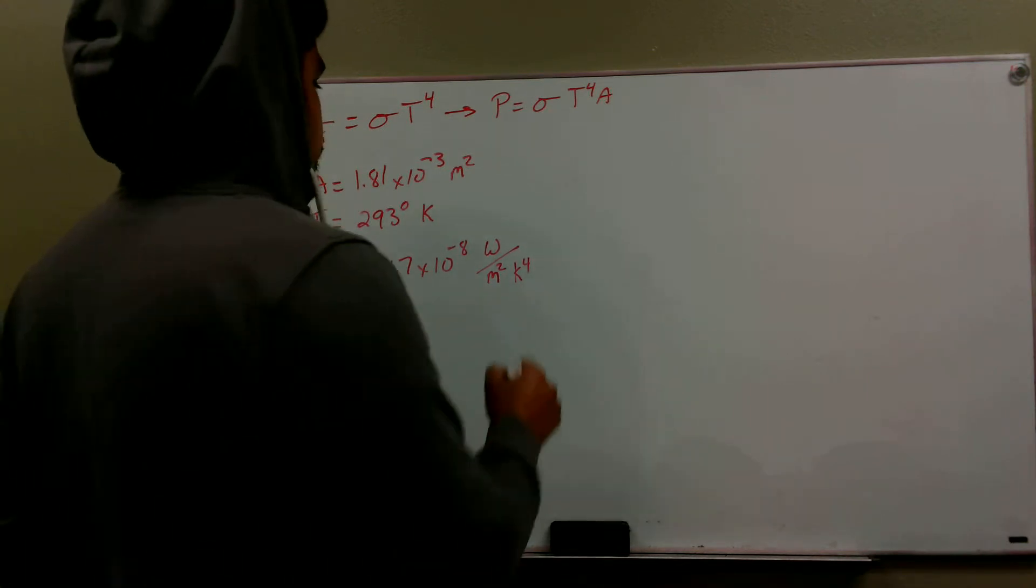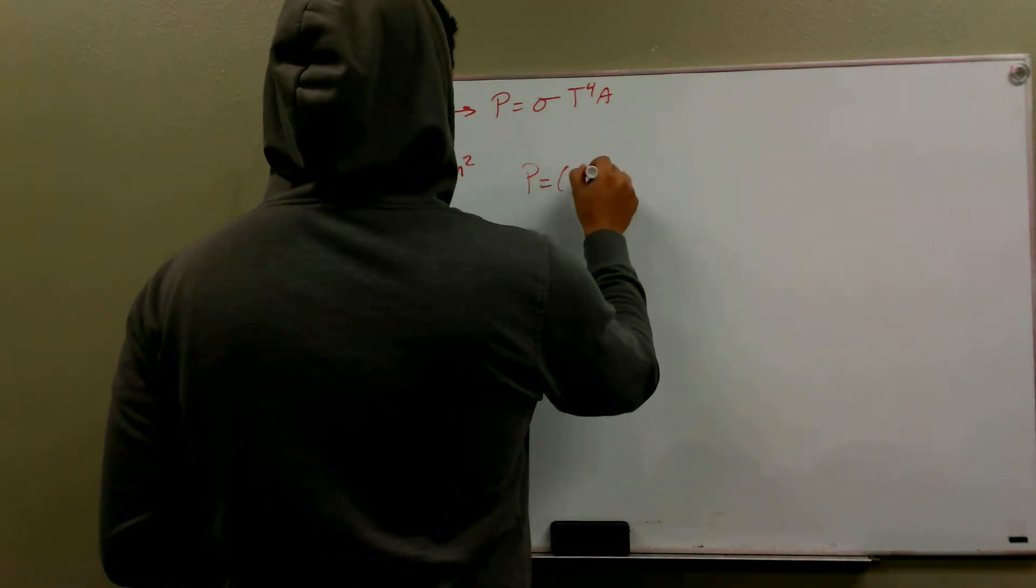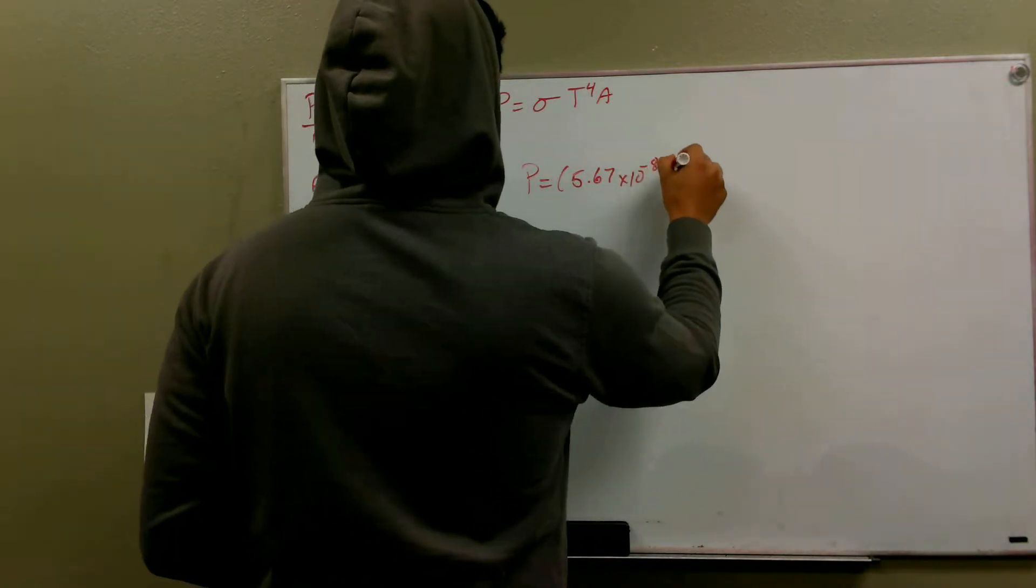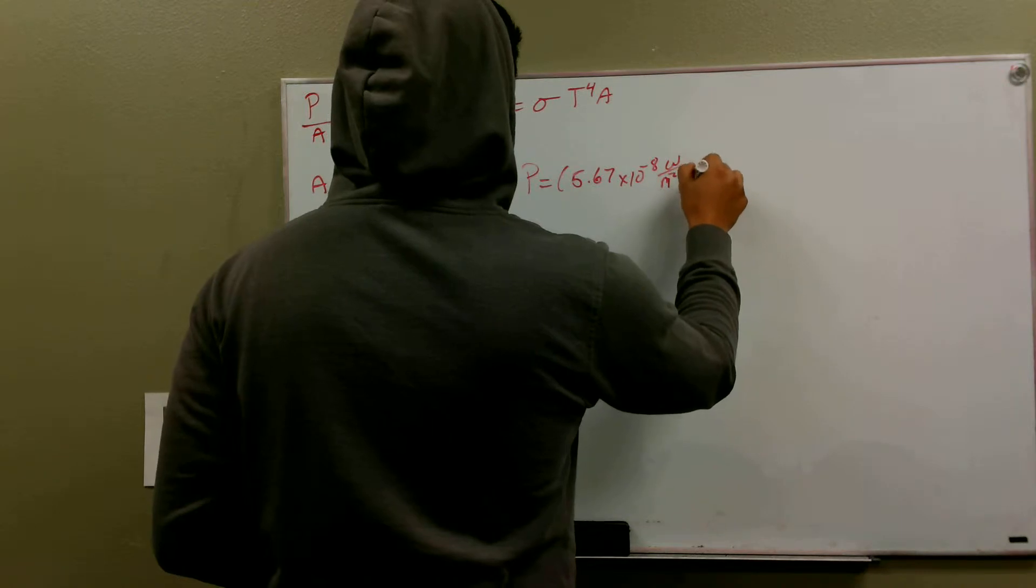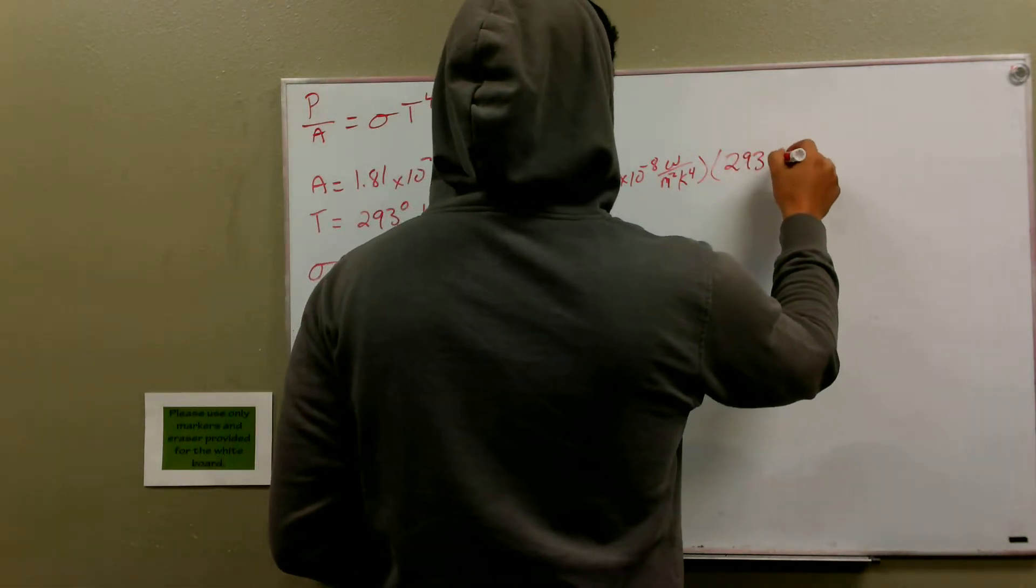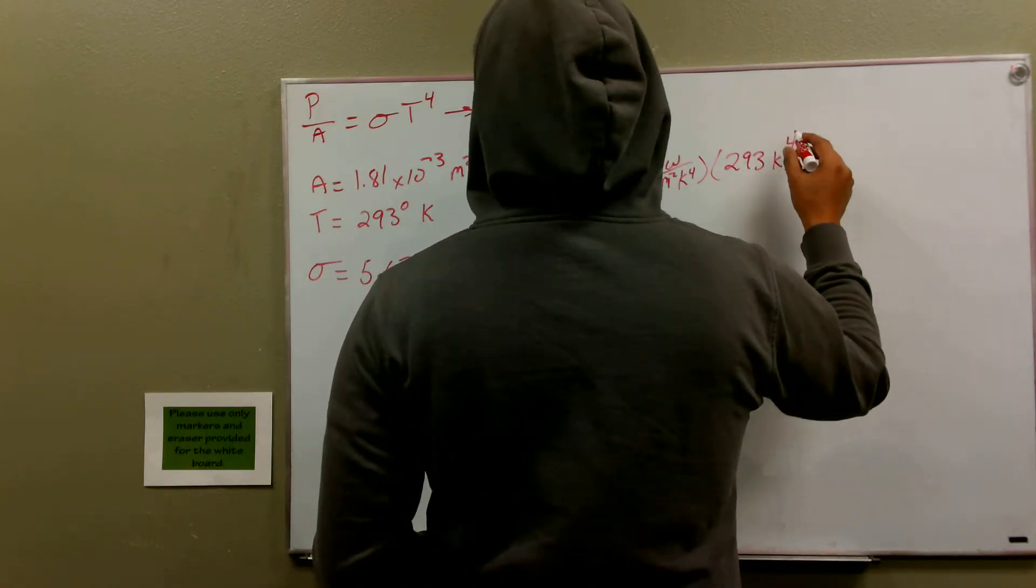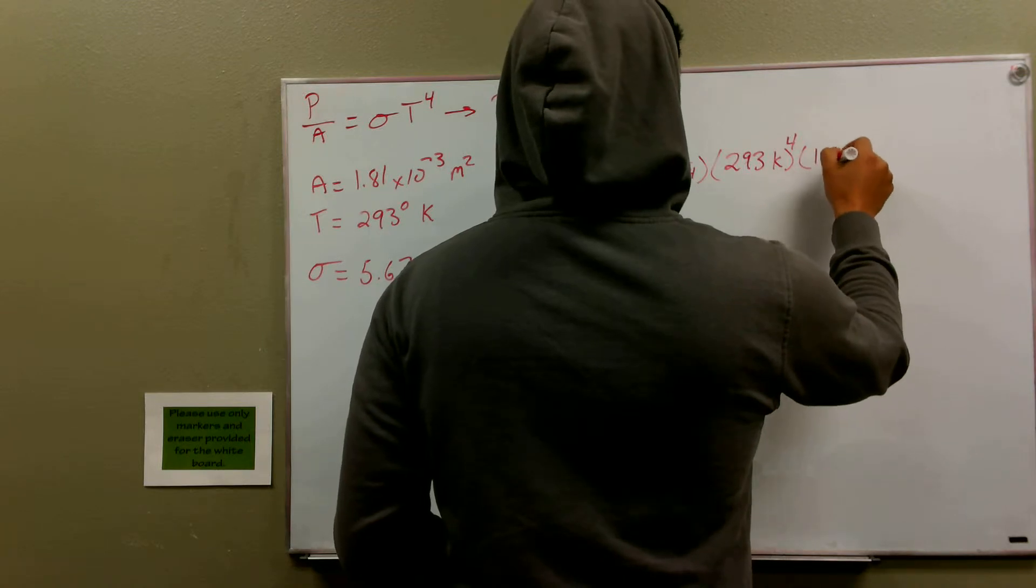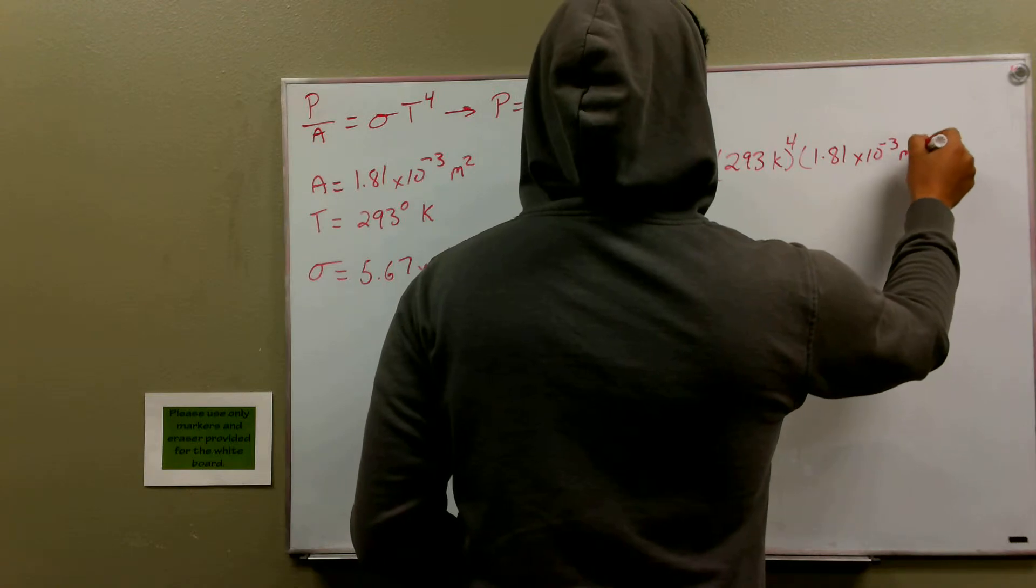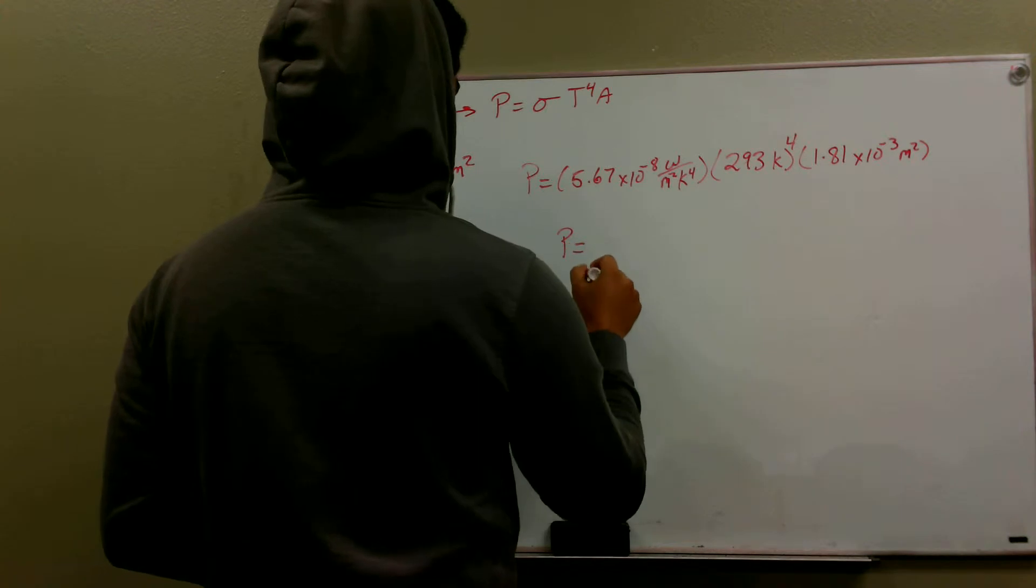Now it's just time to plug and chug. We have our power being equal to our 5.67 times 10 to the minus 8 watts over meters squared Kelvin to the fourth, multiplied by our 293 Kelvin, and this is to the fourth, multiplied by our surface area, which is 1.81 times 10 to the minus 3 meters squared. And when you do all of this math, you end up getting,